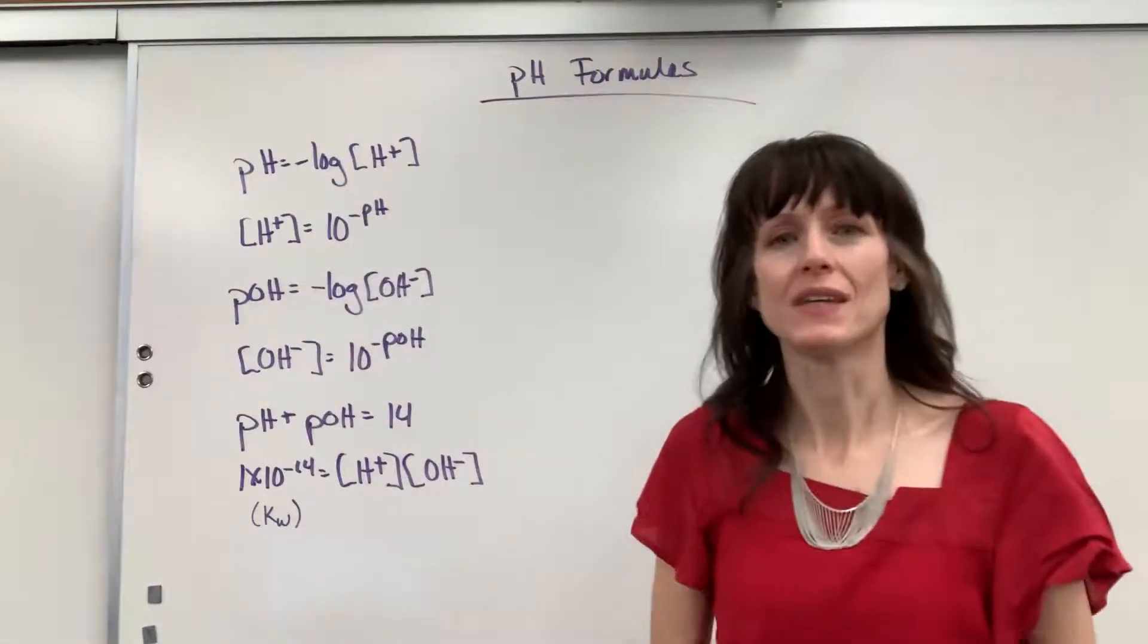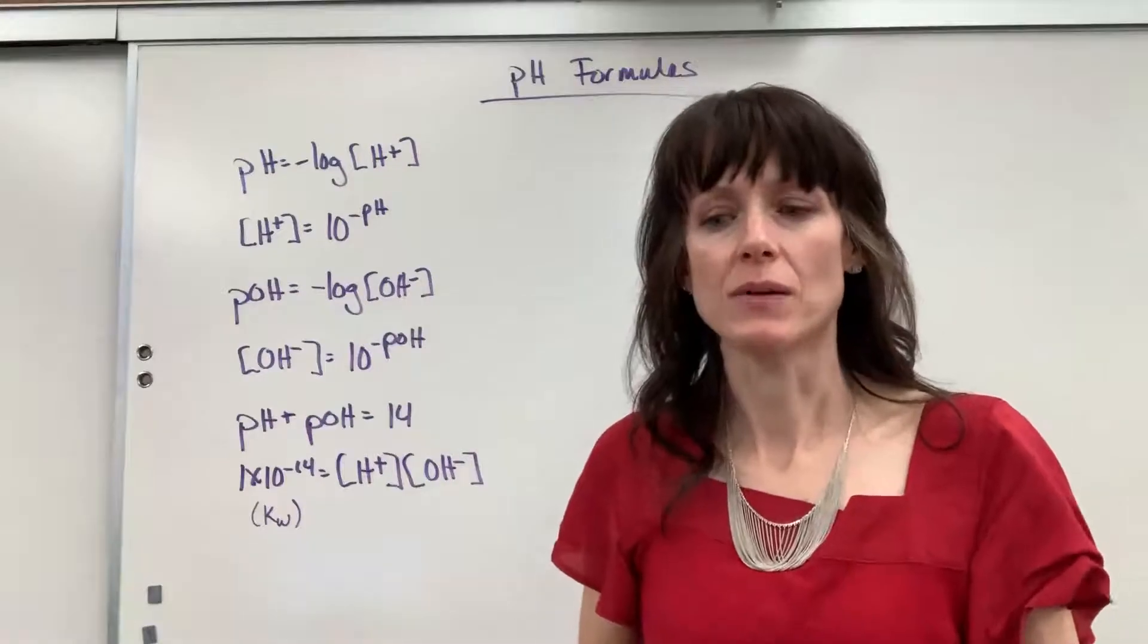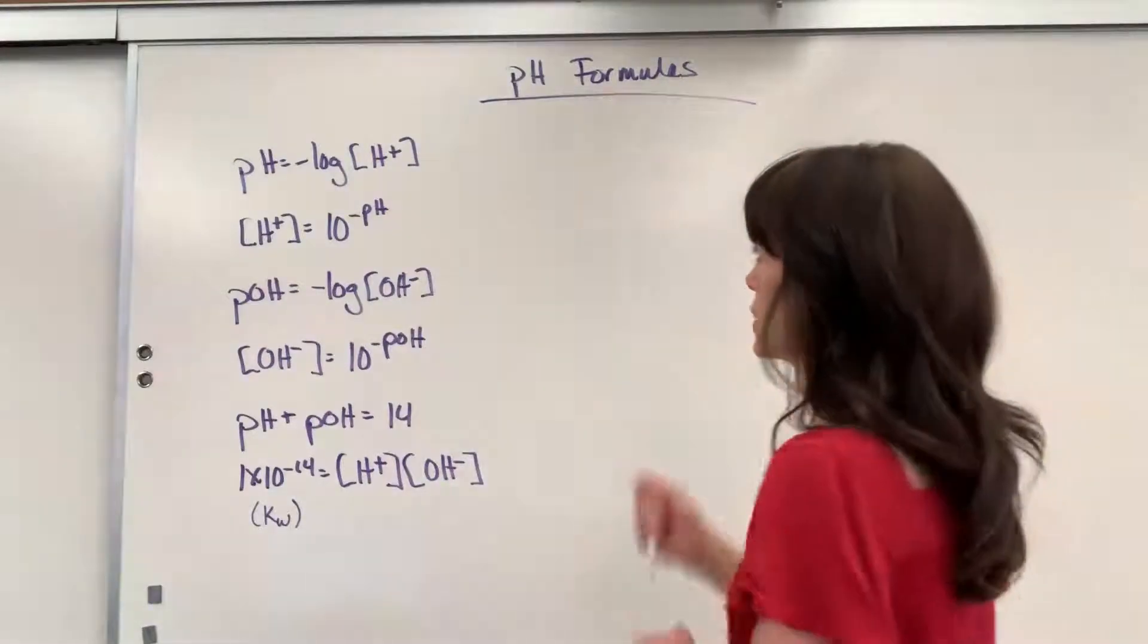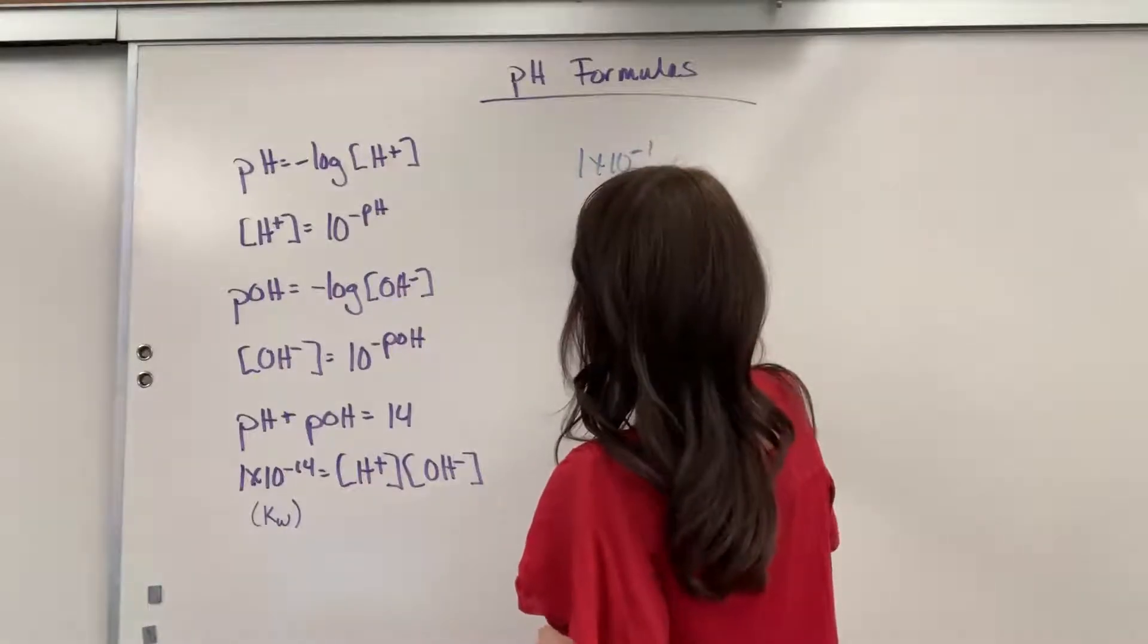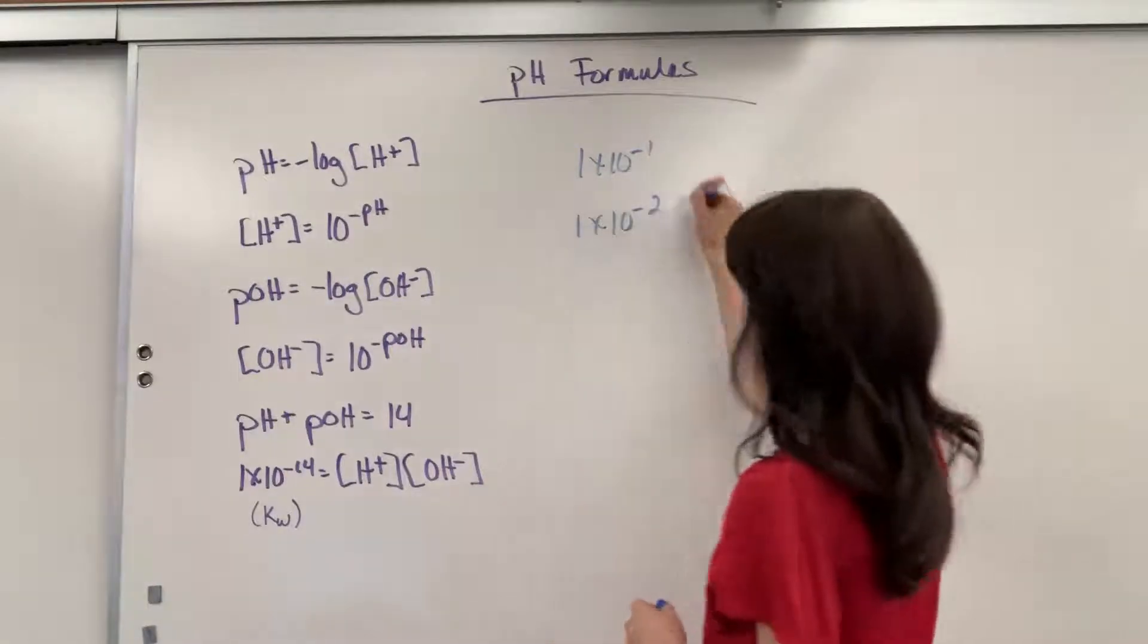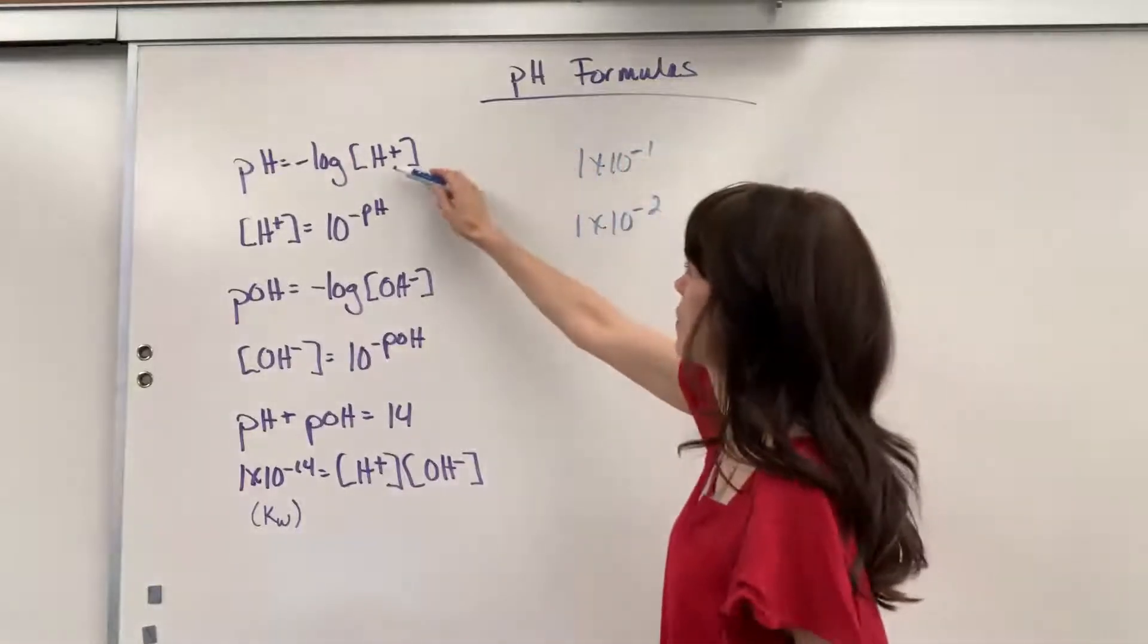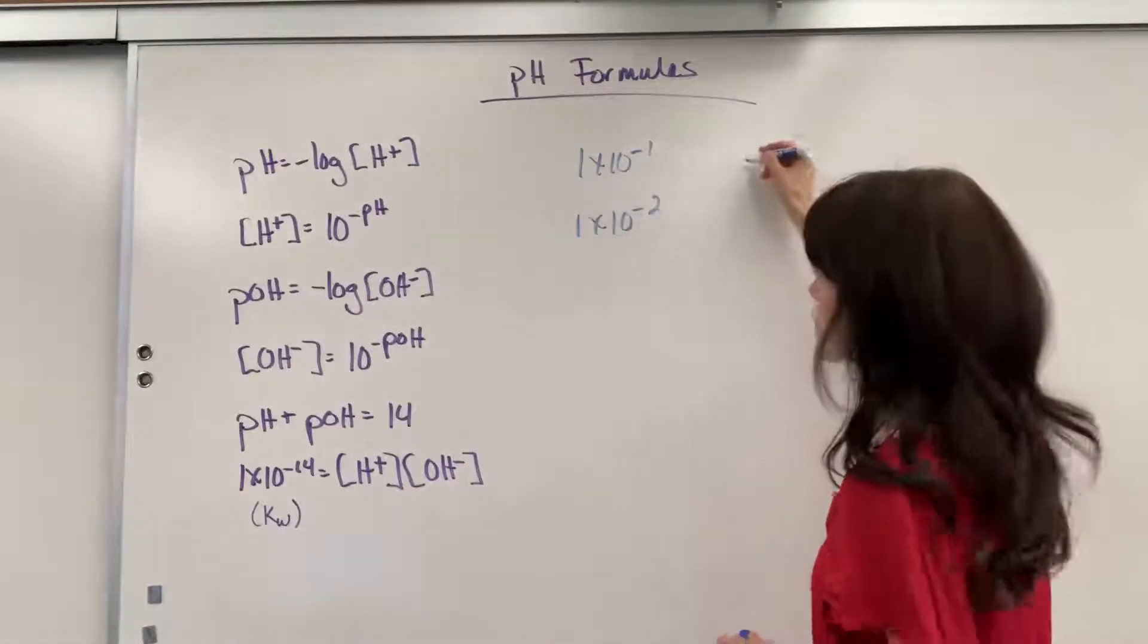Now, remember logs? These move on base 10. So if I have a concentration, let's say of hydrogen, that's 1 times 10 to the minus 1, compared to 10 to the minus 2 of those concentrations, if you take the negative log of 10 to the minus 1,